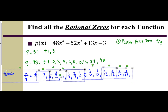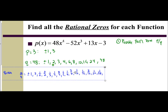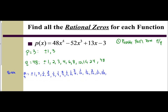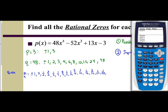So my list has plus or minus 1, 3, 1 half, 3 halves, and all of these fractions — it is a huge list. To make our life easier, we are going to take this list and input it into our graphing calculator. That will assist us with figuring out which of these are actual rational zeros. So make sure you have your graphing calculator with you. Go to your y equals and input the original function: 48x to the 4th minus 52x cubed plus 13x minus 3.